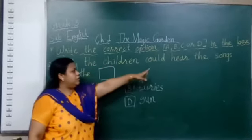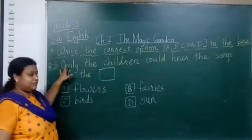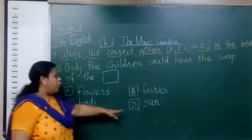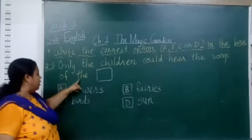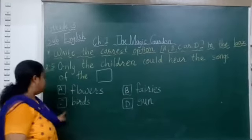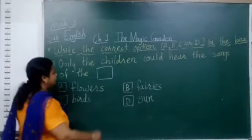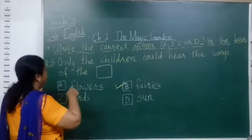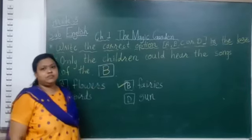Fifth question: Only the children could hear the songs of the — Option A: flowers. Option B: fairies. Option C: birds. Option D: sun. The correct answer is Option B — fairies. Only the children could hear the songs of the fairies. Write Option B in the box.